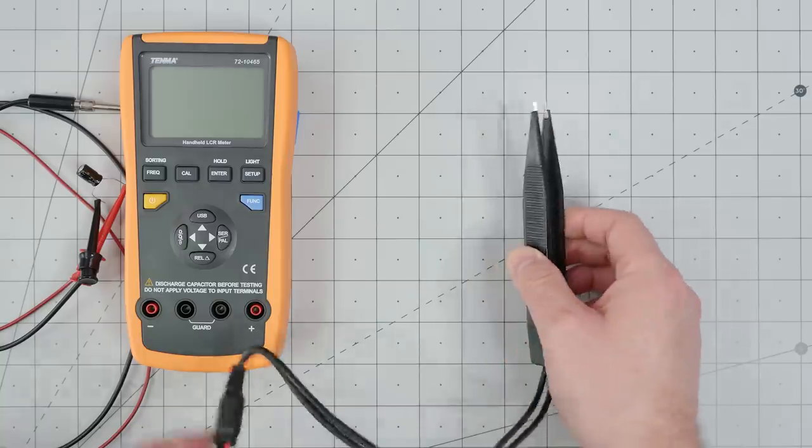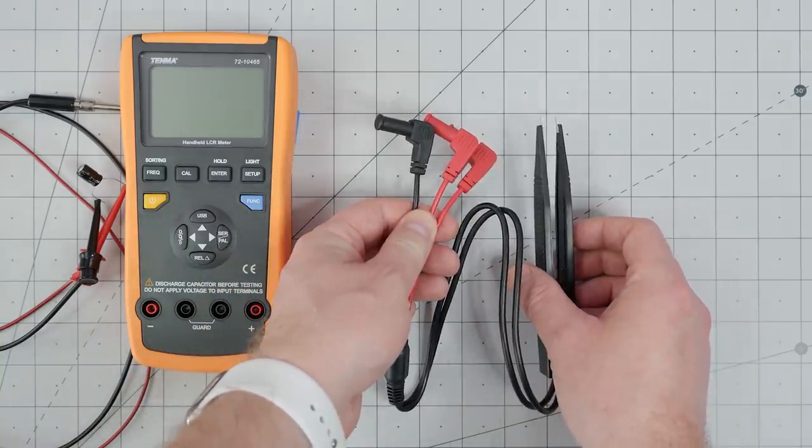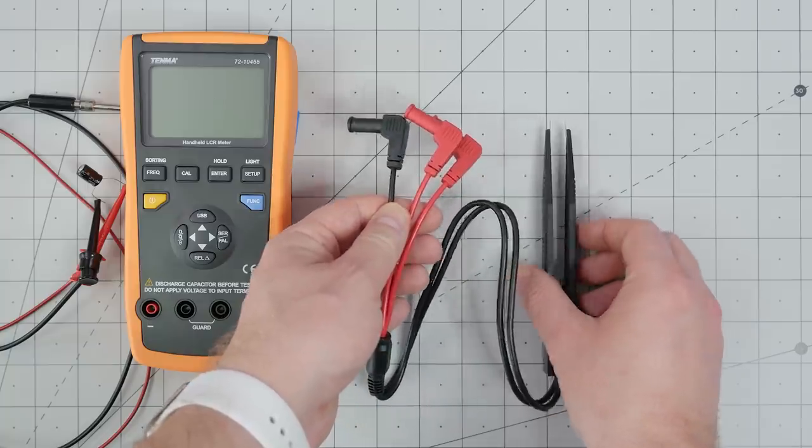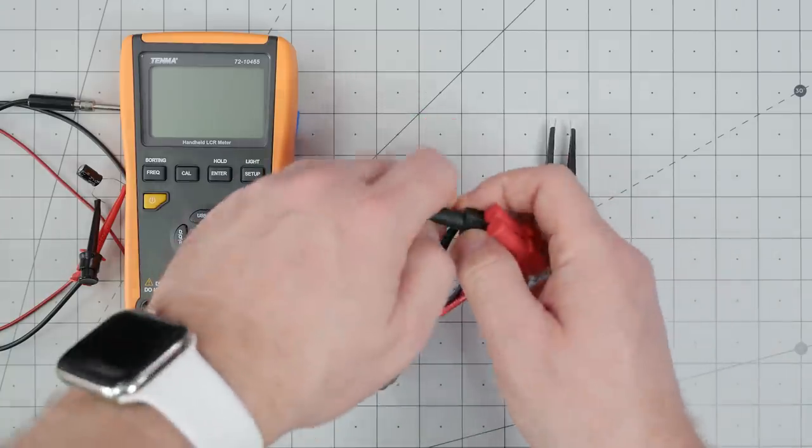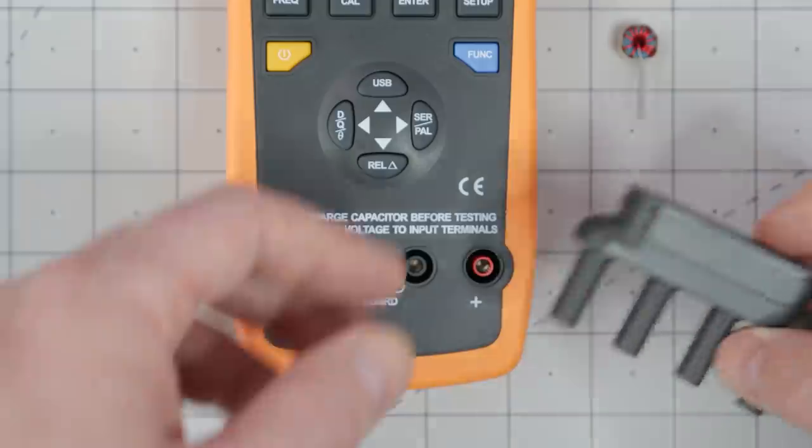Check out these surface mount tweezers. Notice how they have three leads. The positive and negative probe tips have a signal wire with a shield. That shield is connected to the third wire, which connects to the meter's guard input. You can think of the guard like a circuit's ground, but the proper term for it is probably return path.